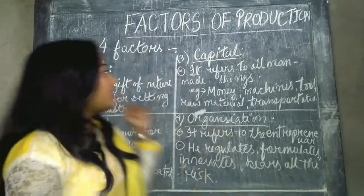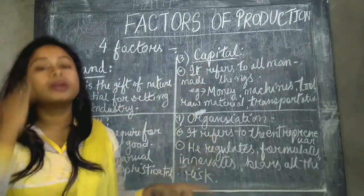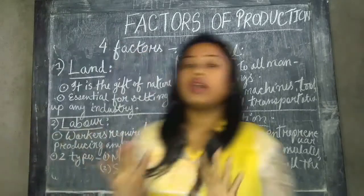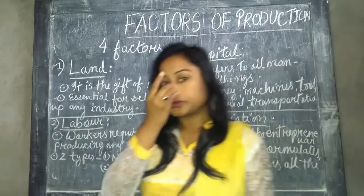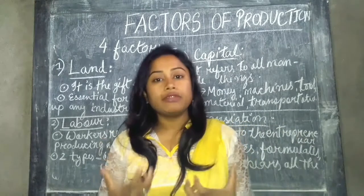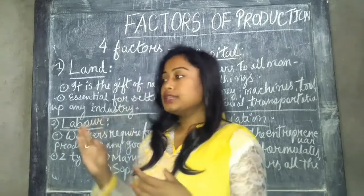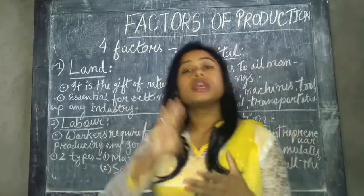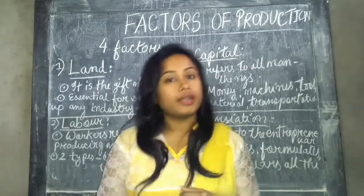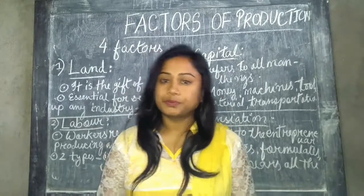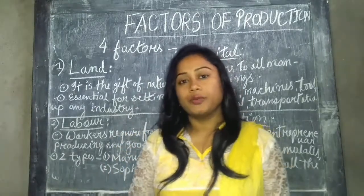The four factors of production are land, labor, capital, and organization. These four are the basic factors of production. If any kind of production activity needs to take place in an economy, these four factors are very much essential for producing that commodity.